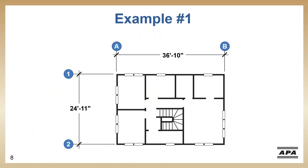We are planning to have brace wall lines on the exterior walls only. We have a brace wall line spacing of about 37 feet between brace wall lines A and B, and about 25 feet between lines one and two. Those are the dimensions we're going to use in our table.